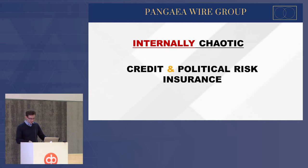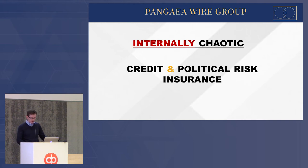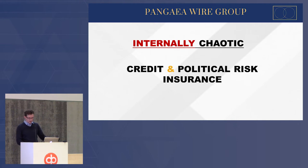Africa continues to represent the largest regional exposure, accounting for just over 20% of the portfolio in terms of this kind of insurance. In 2019, a new insurance consortium was created, led by specialist providers Neon and MS Amlin, as a response to the growing need for political risk and credit insurance. There's been a concerted effort in London to provide this insurance because risks are growing in different parts of the world.